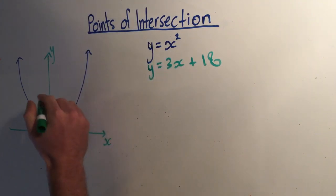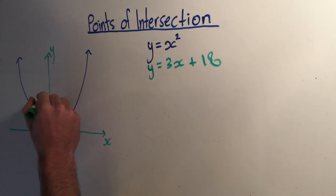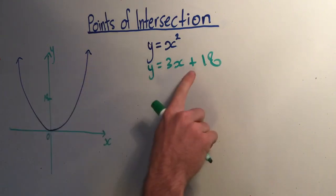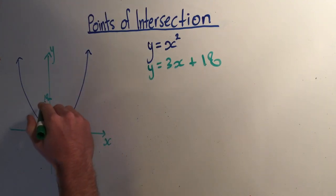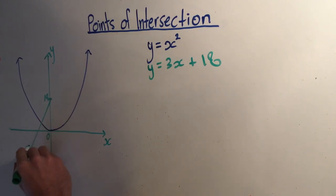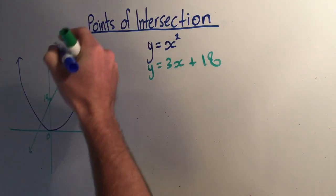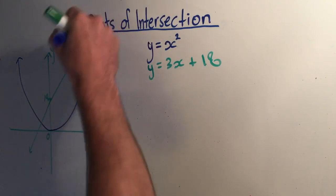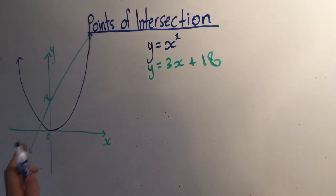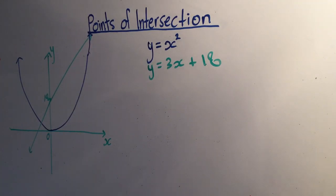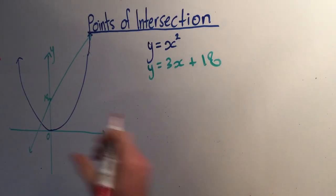If I draw this line, it would look something like this. I'm going to make that the y-intercept, and it's got a gradient of 3, so it's quite steep. Looking at these two lines together, we can see there are two points of interest, called the points of intersection — the points where the two lines intersect or meet each other. They cross over each other at these two points.